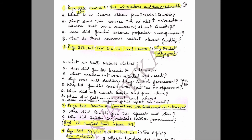Question 7: Page 356–357, Figures 13.6 and 13.7, and Source 3 — 'Why the Salt Satyagraha.' Questions: What do both pictures depict? How did Gandhi break the salt law? What movement started as a result? Why was salt destroyed by the British government? Why did Gandhi consider the salt tax as oppressive? When did the Salt March begin and from where? When did the Salt March end and where?